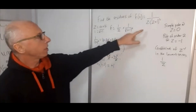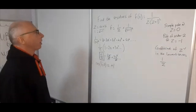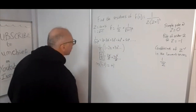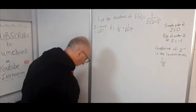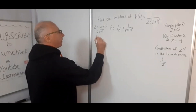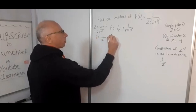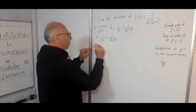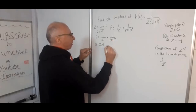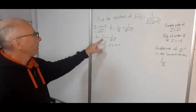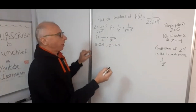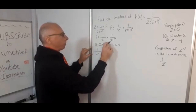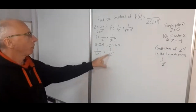Now we want to find the residue at z = -1. We rewrite f = (1/z)(1/(z+1)²) and do a substitution: let u = z + 1, so z = u - 1. In the u world, 1/z becomes 1/(u-1), and 1/(z+1)² becomes 1/u². So our function becomes (1/(u-1)) times (1/u²).